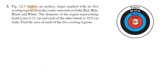Figure 12.3 depicts an archery target marked with its 5 scoring regions from center outwards as gold, red, blue, black, white. The center region is gold, followed by red, blue, black, and white.